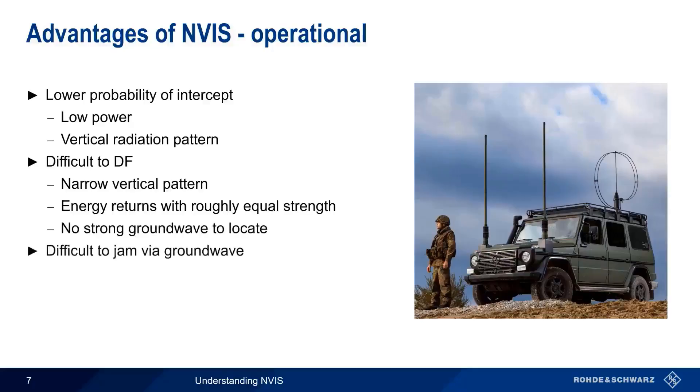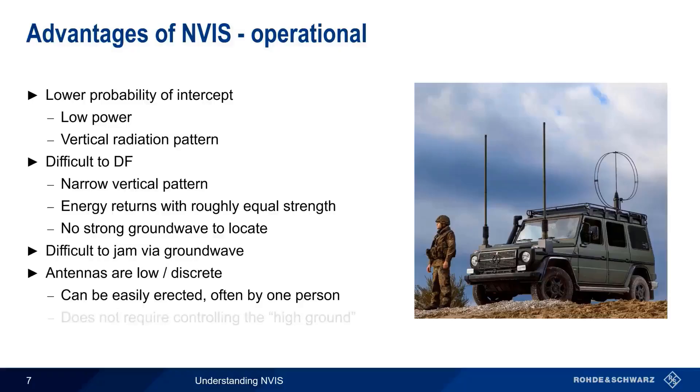Conversely, it's also difficult to jam NVIS signals using a ground-wave jammer. NVIS antenna patterns are designed to have very low or poor gain at traditional ground-wave angles, and therefore will also not receive ground-wave jamming signals as strongly. NVIS antennas are mounted comparatively low to the ground, making them discrete and difficult to notice. Being low to the ground also makes NVIS antennas easy to erect, and many can be set up by a single person. And finally, since the radiation angle is roughly vertical, there's no need to control the high ground to make effective use of NVIS. Obstructions in the horizontal plane, like trees, mountains, buildings, etc., are much less important than in traditional skywave propagation.